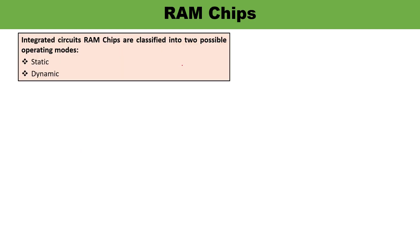To start with RAM chips — integrated circuit RAM chips are again classified into two possible operating modes. The first is static RAM. Static RAM consists of flip-flops, and these flip-flops store the binary information. This information remains valid and intact as long as the power is applied to the unit. Once the power is turned off, the data will be erased.